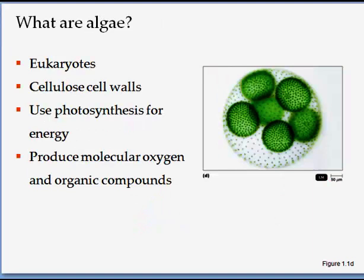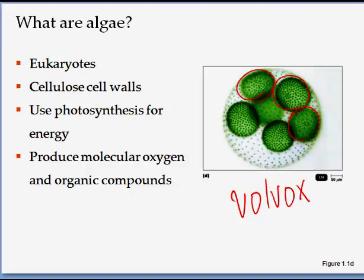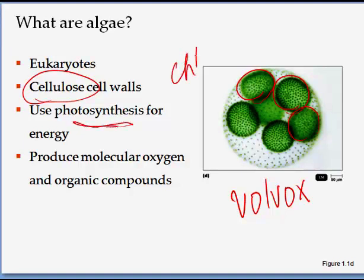Here is a picture of a unicellular algae shown in a colony — this particular one is Volvox. Each of these individual cells is one cell and they are present together as one colony. They all have cellulose in their cell walls, which makes them a little unique. Algae undergo photosynthesis because they have the pigment chlorophyll — mostly any cell that is green in color will have chlorophyll. Algae produce molecular oxygen and organic compounds.